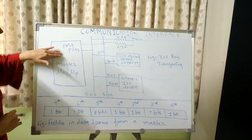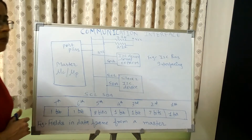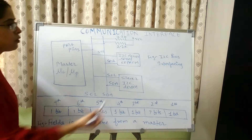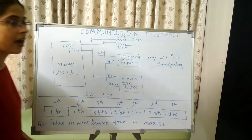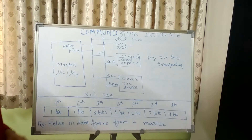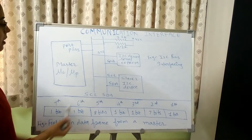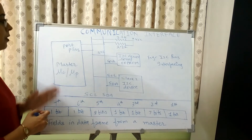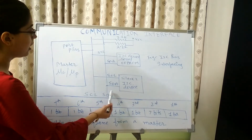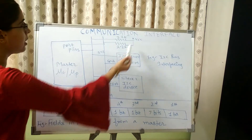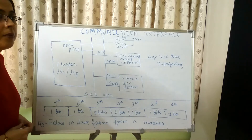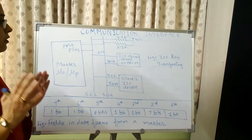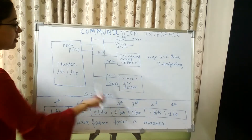You can see that here is the master and these are the slaves attached to the I2C bus. This bus is also pronounced as I2C. The I2C bus consists of the SCL line and the SDA line. For proper functioning of this circuit, both the SCL line and the SDA line are connected to VCC via a pull-up resistor.